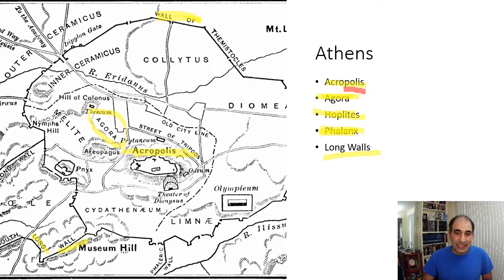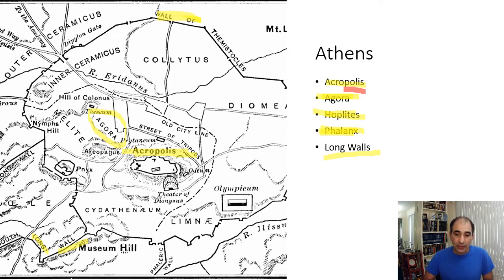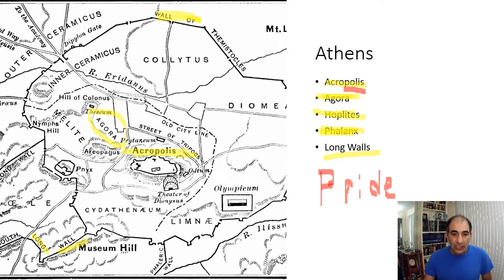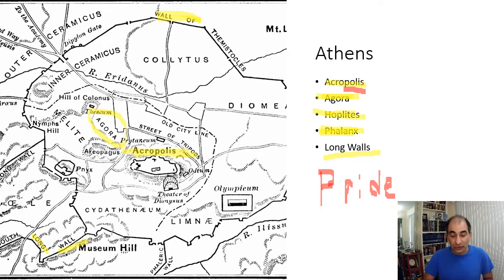So these are things many of the Greek city-states had in common: same language, same gods, the basic components. Another one I didn't put up here but definitely want to note is pride. No matter what Greek city-state you were part of, they had a lot of pride in their city-state. One of the worst things that could happen to you was not death, but actually being kicked out of your city-state, which we'll talk about later.